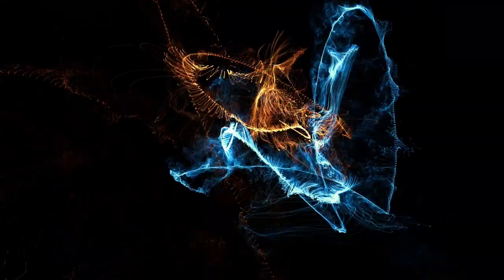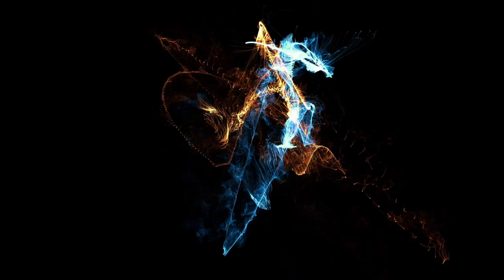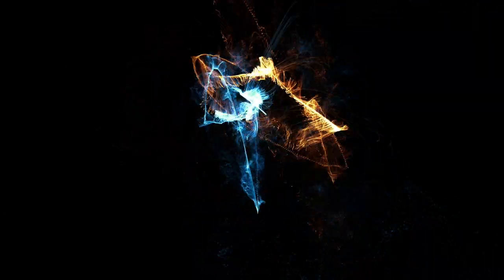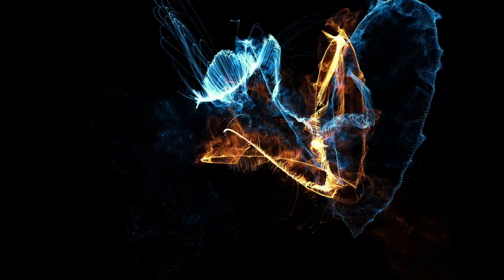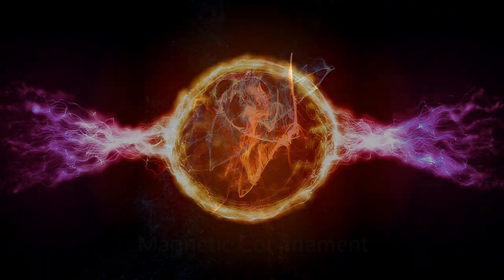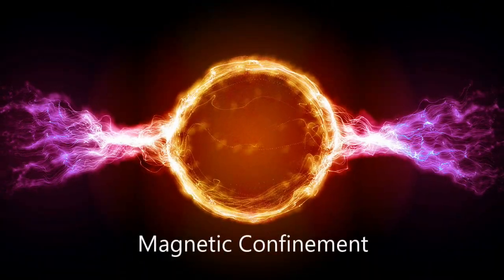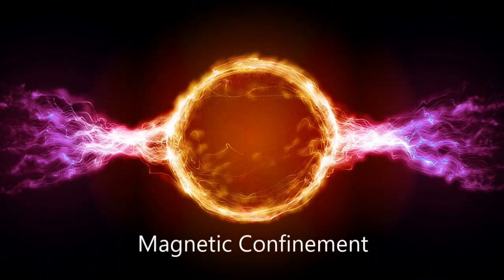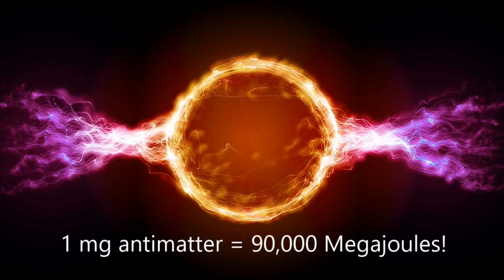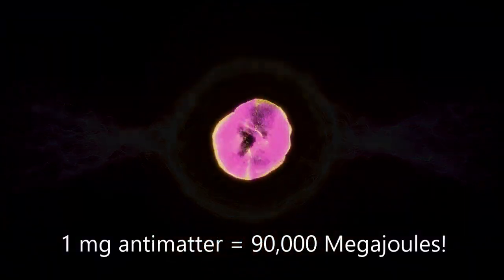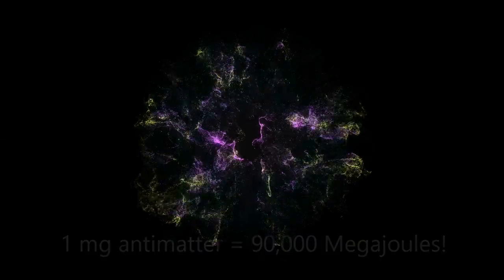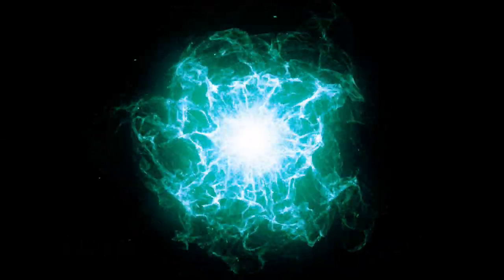Can anything beat fusion? Only antimatter. If we could produce and store antimatter, we could beat the efficiency and power of even a fusion drive. If we only burned one milligram of antimatter in our reactor, we would be able to produce 90,000 megajoules of pure energy, and this is the limit of power density in our universe.